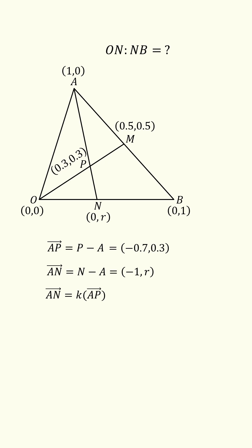But AN is also equal to a multiple k of the vector AP. Setting up this equation and distributing through, we can see that k is equal to 10/7.